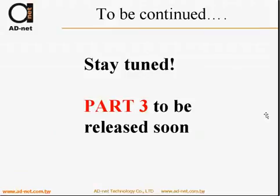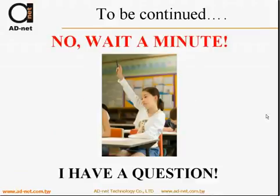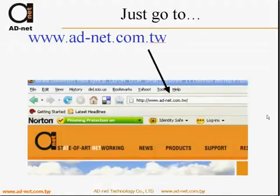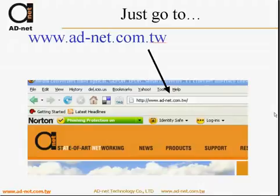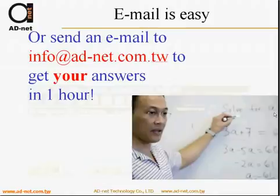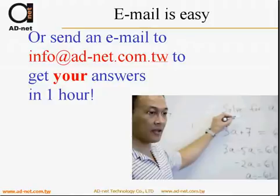That's what we wanted to say. In part 3 — wait, I have a question. Well, that's actually easy. You can go to www.adnet.com.tw and fill out the contact form. There are support forms near every product where you can ask any question you have. We can help you plan, help you quote prices, and get you answers. A very easy way is just to send an email to info@adnet.com.tw and get your answers in one hour. Thank you, and let's wait for part 3. Stay tuned.